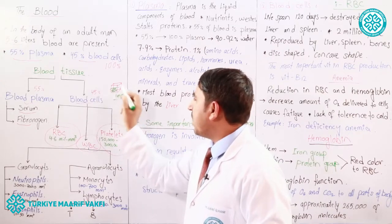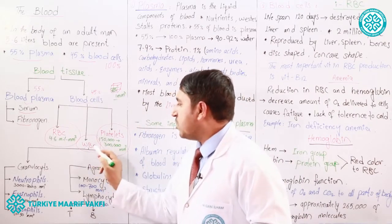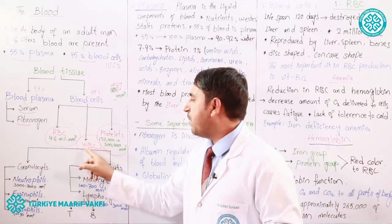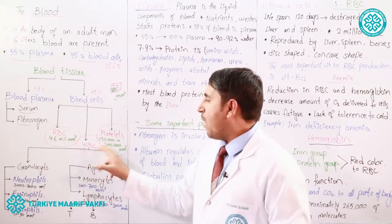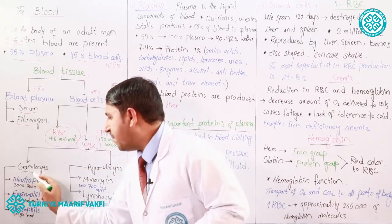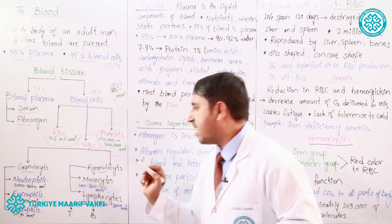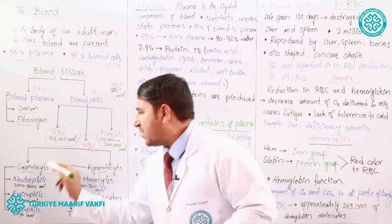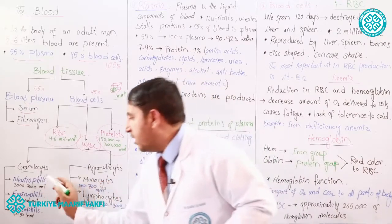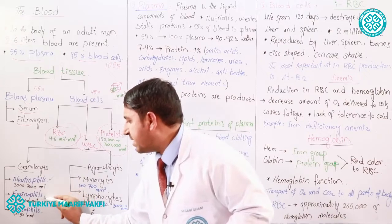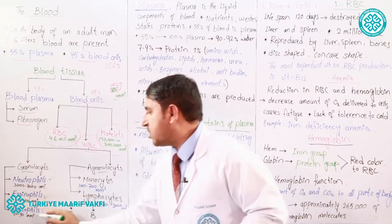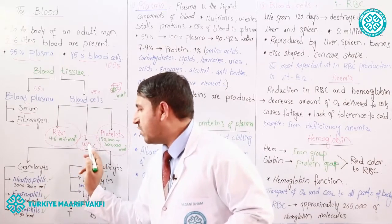WBC in Latin is called leukocytes. WBC stands for white blood cells. Two types of white blood cells exist in our blood: the first type is granulocytes and the second type is agranulocytes. Granulocytes have three types: the first is neutrophils, the second is eosinophils, and the third is basophils.